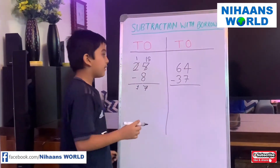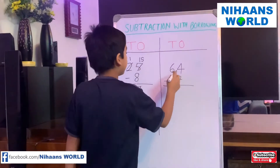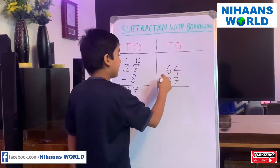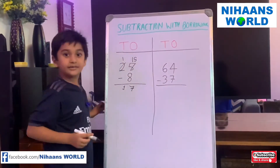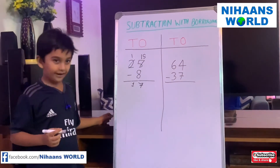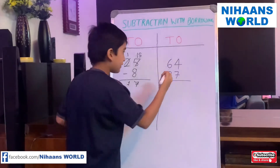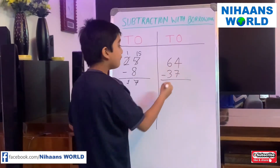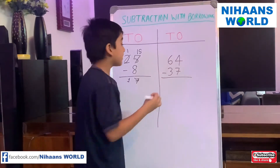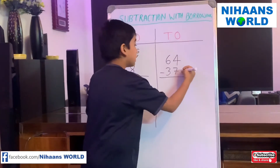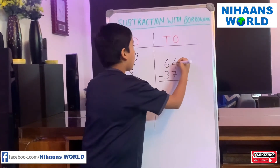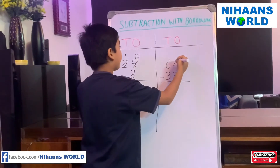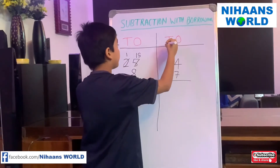The next example is 64 minus 37. Let's solve it. We cannot subtract 7 from 4, so we have to borrow from 10.